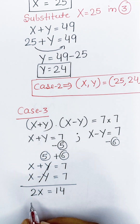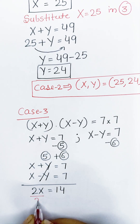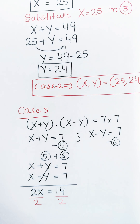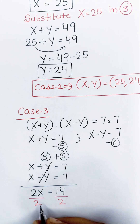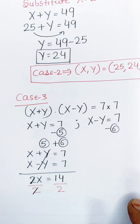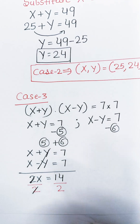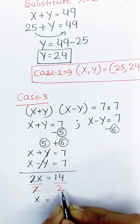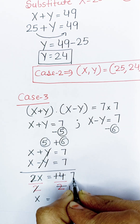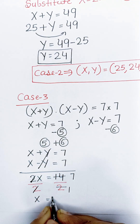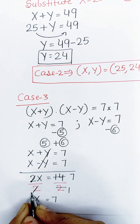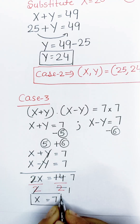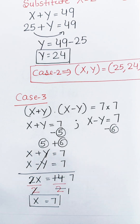Divide both sides by 2. On the left-hand side, the 2s cancel out leaving x. On the right-hand side, 14 divided by 2 gives 7. So we get the value of x equals 7.